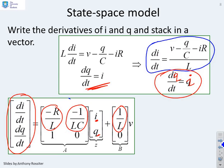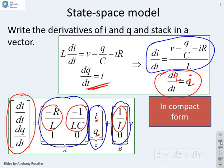And essentially, therefore, I've defined a matrix A which multiplies on a state vector i and q plus a matrix B which multiplies on the voltage. And so in compact form, I've now got an equation z dot equals Az plus Bv. So the derivatives of the states or a vector of the derivatives of the states equals some matrix A times the vector of the states plus some matrix B times the input.